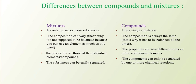In mixtures, the properties are those of the individual elements — as in the example of iron and sulfur, where you can use a magnet to separate the iron from the sulfur easily. But in compounds, the properties are very different from those of the component elements. The substances can be easily separated in a mixture by using different methods. But in compounds, the components can only be separated by one or more chemical reactions — meaning it is nearly impossible to separate substances that have been chemically bonded together to form a compound, unless another chemical reaction takes place.